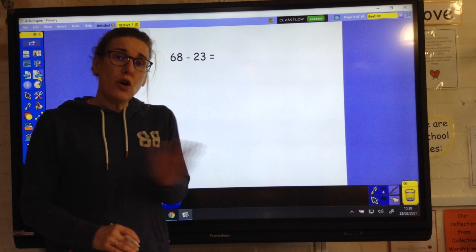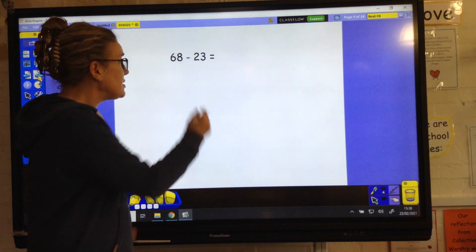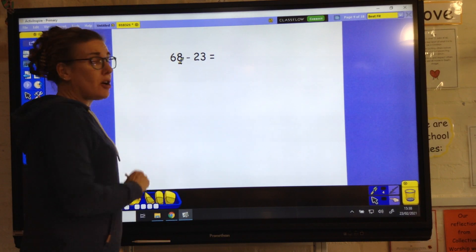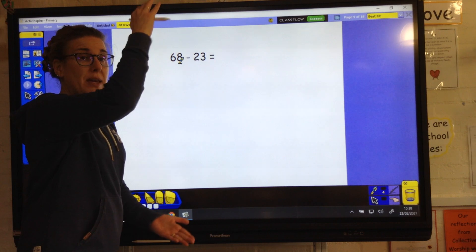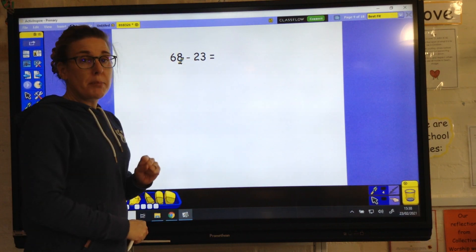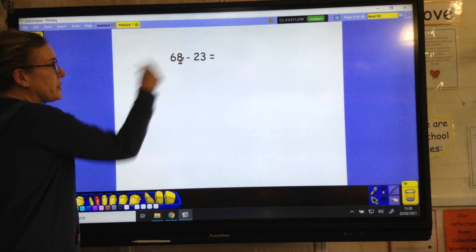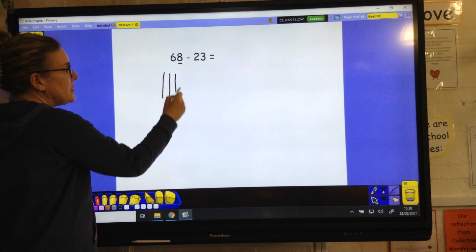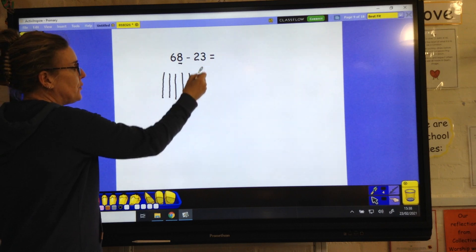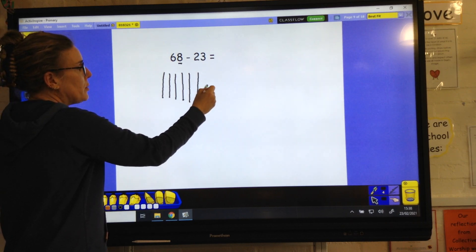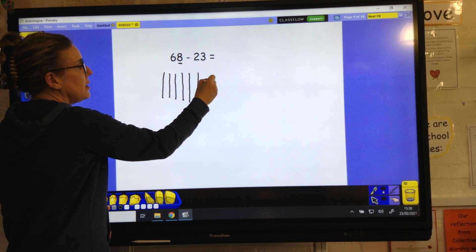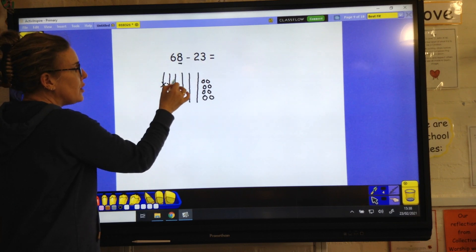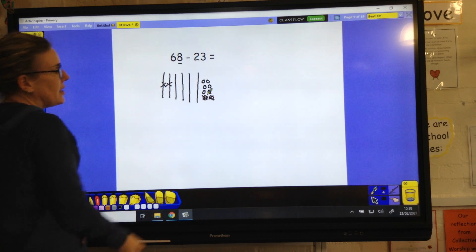Today, have a look. We're not crossing the tens boundaries today. The number that you start with is going to have a bigger set of ones than the number that you're taking away. If we were drawing the dienes and we were drawing 68, 10, 20, 30, 40, 50, 60, we would draw our 8. Then we can take off our 23 nice and easily.